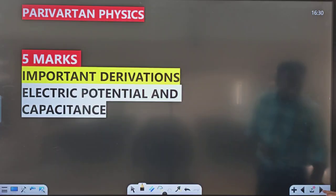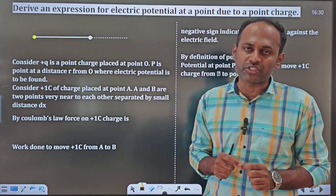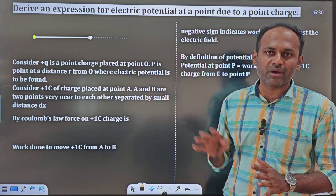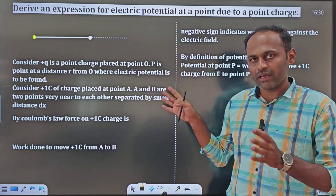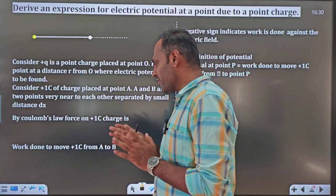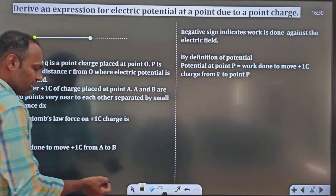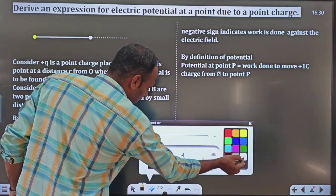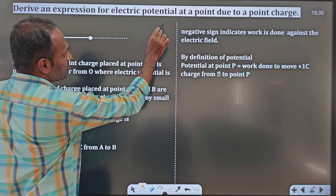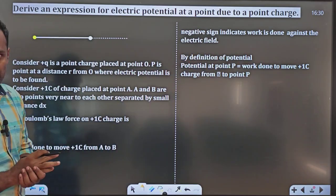Let us begin without wasting time. In this chapter, there is only one 5 mark important derivation — the expression for electric potential at a point due to a point charge. Electric potential due to a point charge.